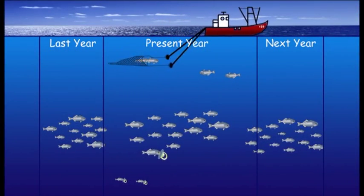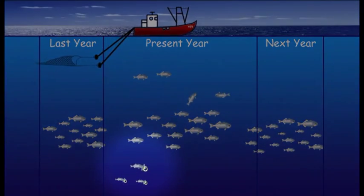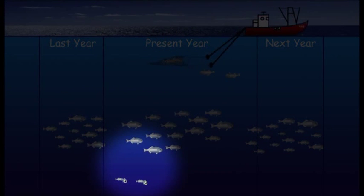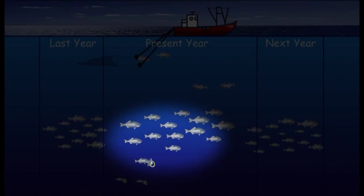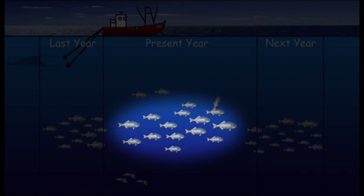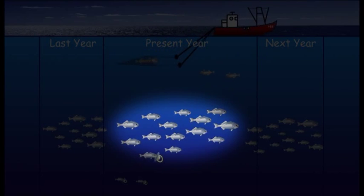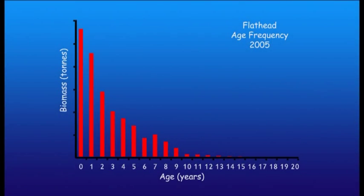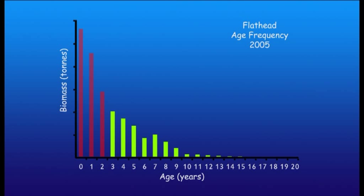Let's go back to our diagram and start with the factors that increase population size — recruitment and growth. We'll start with recruitment. Because of availability and trawl net selectivity, tiger flathead are recruited to the fishery at about 25cm in length, or 3 years old. This is when we start measuring them to get information about the stock. Flathead of 3 years and older are represented here by the green bars. We know from length measurements and ageing data that the age frequency of the tiger flathead population looks something like this.